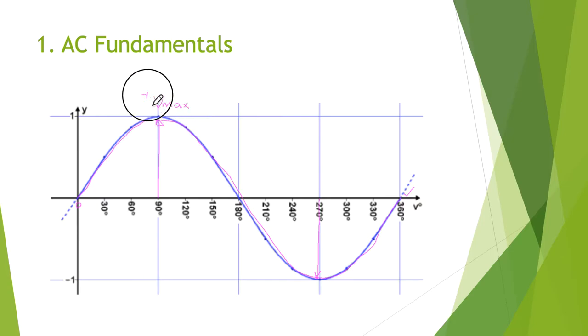This is the positive Vmax and this is the minus Vmax down here. Therefore we end up with a volts peak to peak from here to here.